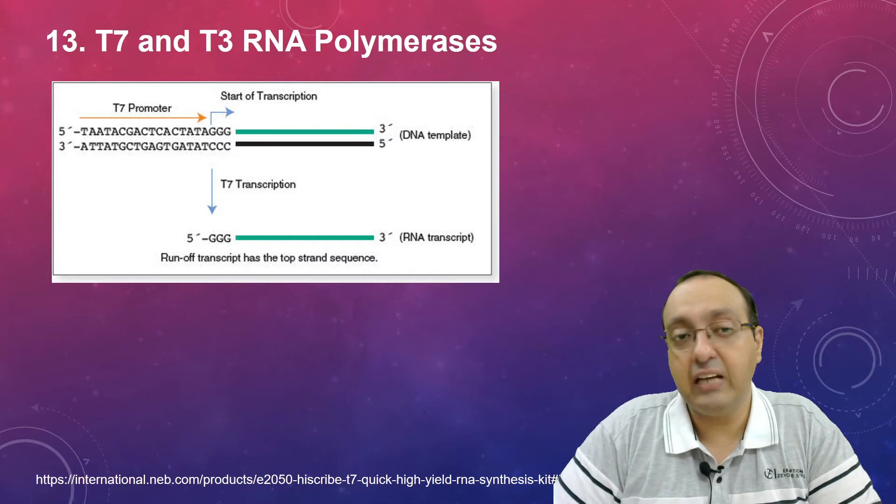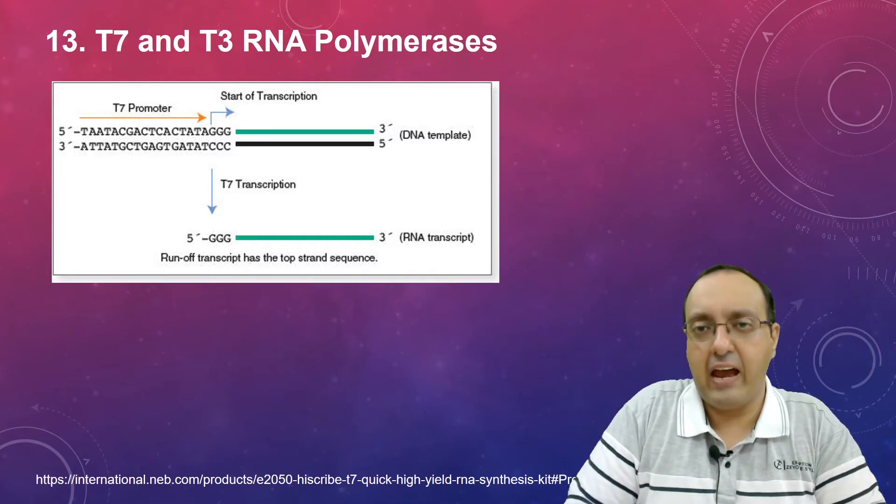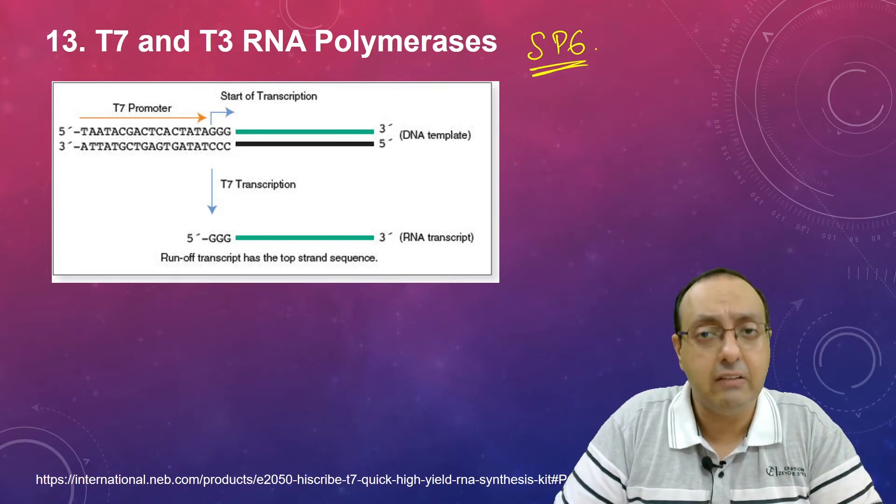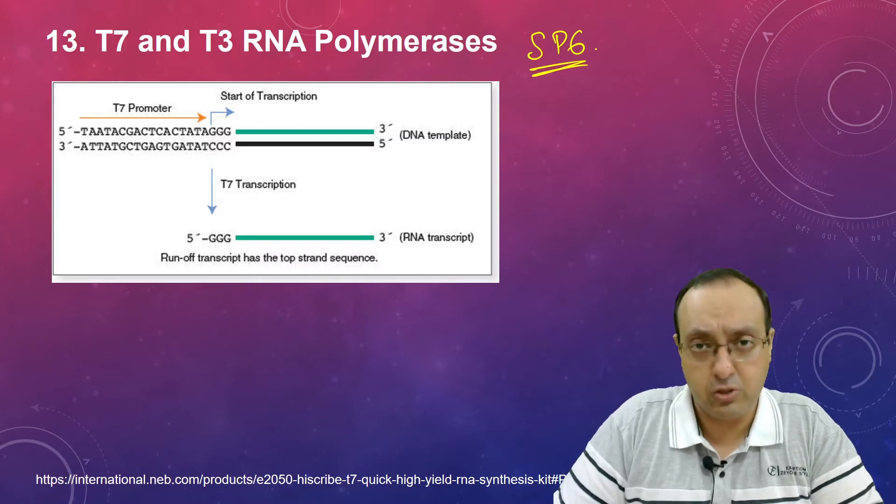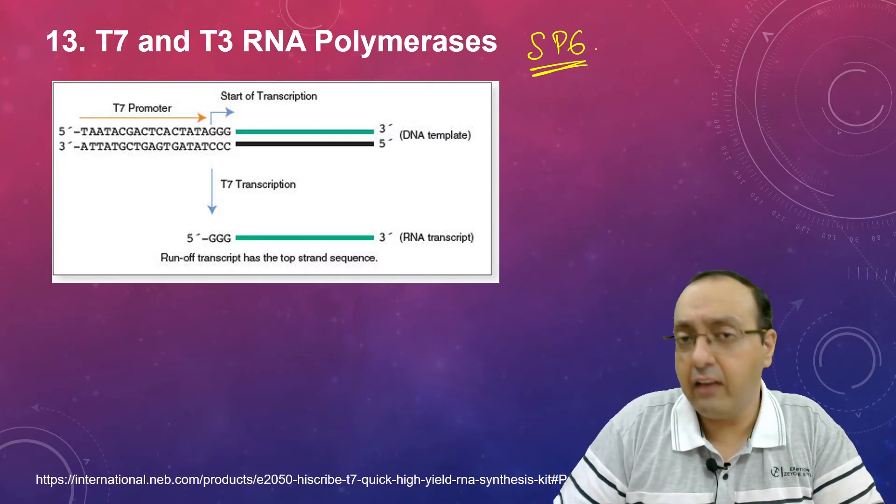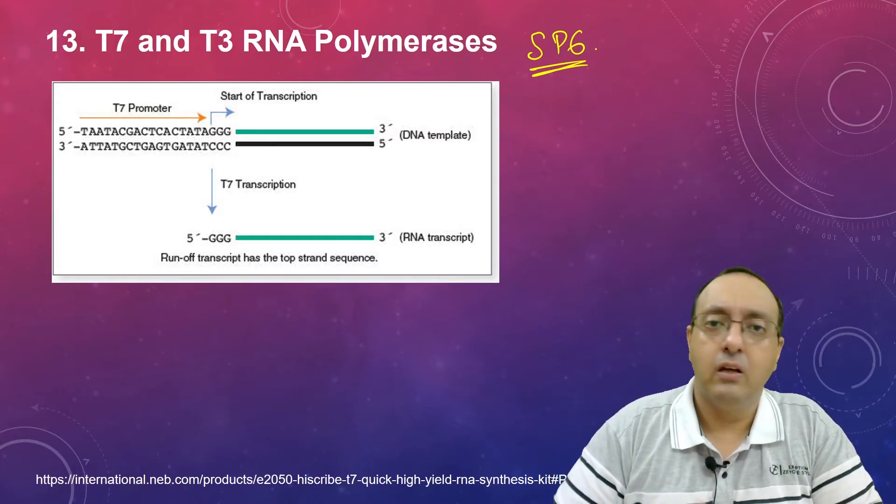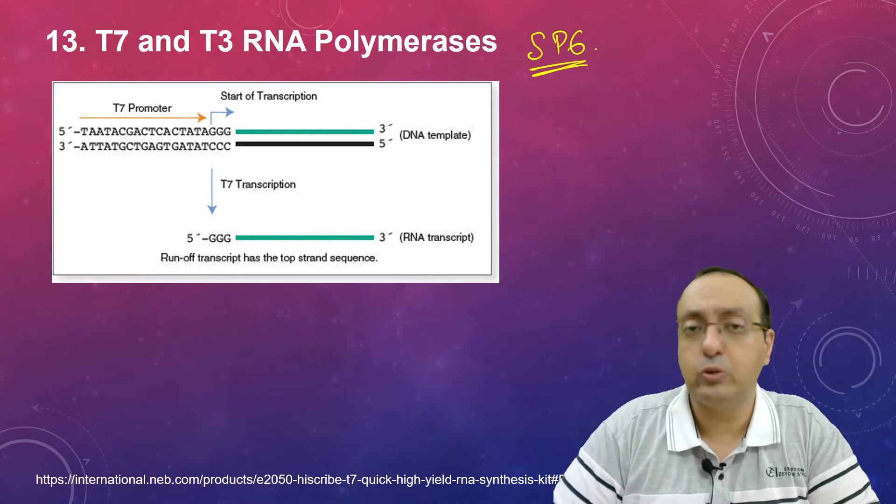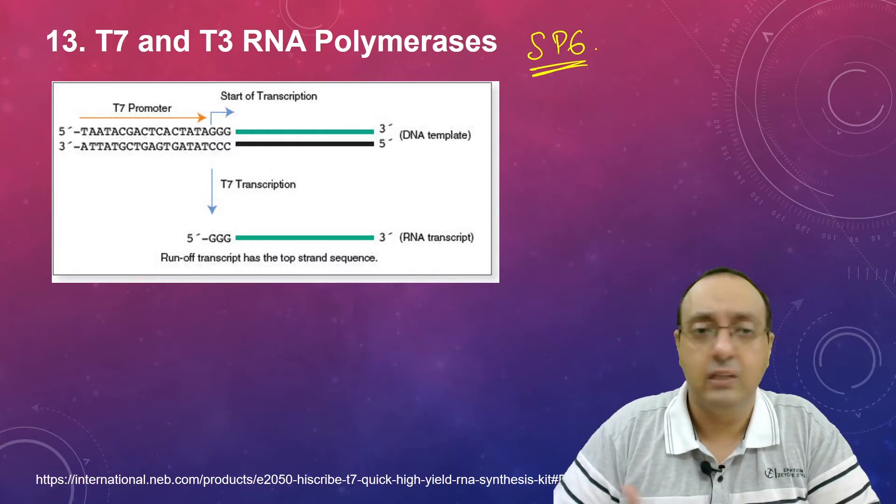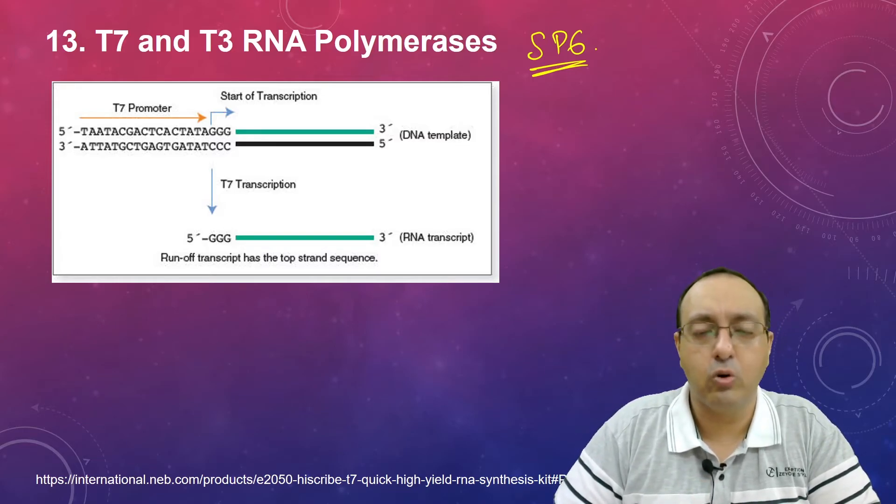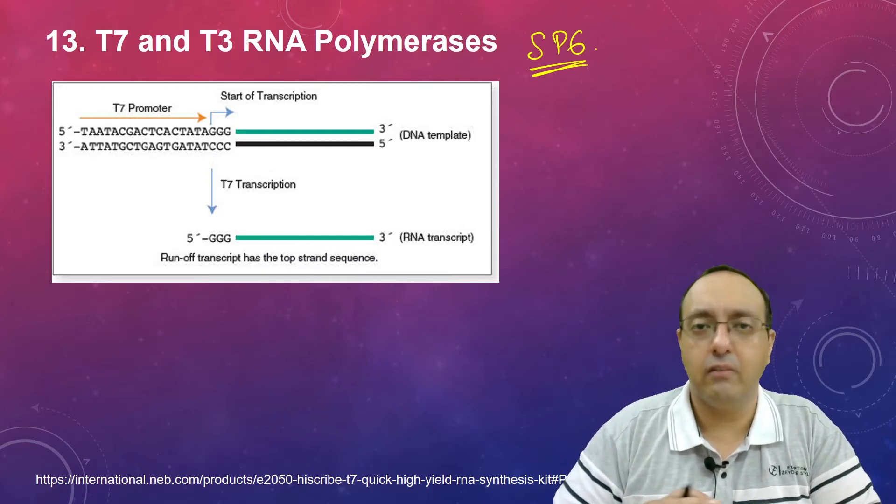Number 13, T7 and T3 RNA polymerases, and I would like to add actually SP6 RNA polymerase also. These are three RNA polymerases which are extensively used for in vitro transcription reactions and for making lots of RNA which can be further used for in vitro translation. Making radioactive probes or fluorescent probes or antisense RNA probes, T7 and T3 RNA polymerases are used as well as the SP6 RNA polymerase. Very strong promoters and very high fidelity enzymes, so they are used routinely for these purposes.